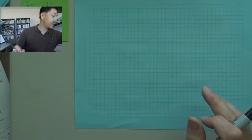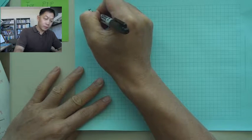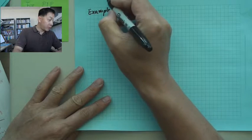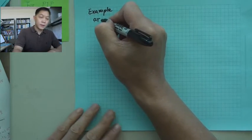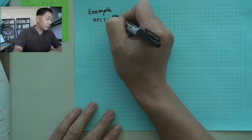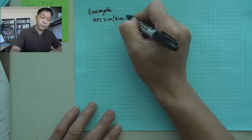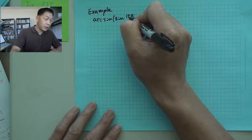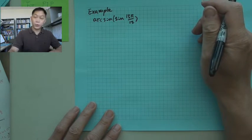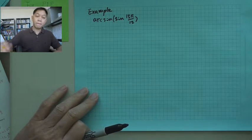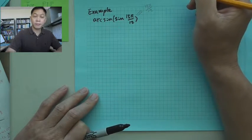Let's work on the examples. We will do our first example. That will be arcsine sine 13 pi over 12. For this example, you may think that would be 13 pi over 12, and this is wrong.